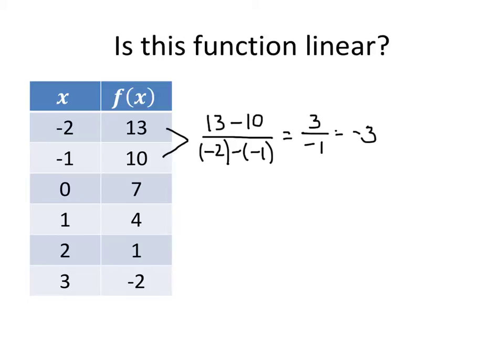But we don't yet have enough information to definitively say if this is a linear function — we have to keep going. For the next pair of points, our change in y over change in x turns out to be 10 minus 7 divided by negative 1 minus 0. On the top we get 3, and on the bottom we get negative 1, and that gives us an average rate of change of negative 3.